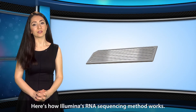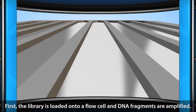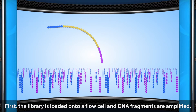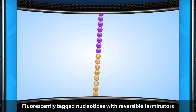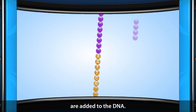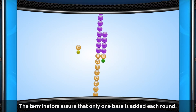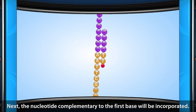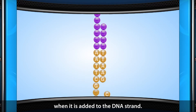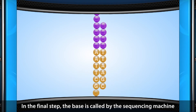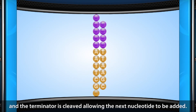Here is how Illumina's RNA sequencing method works. First, the library is loaded onto a flow cell and DNA fragments are amplified. Fluorescently tagged nucleotides with reversible terminators are added to the DNA. The terminators assure that only one base is added each round. Next, the nucleotide complementary to the first base will be incorporated. Each type of nucleotide will emit a unique light wavelength when it is added to the DNA strand. In the final step, the base is called by the sequencing machine and the terminator is cleaved, allowing the next nucleotide to be added.